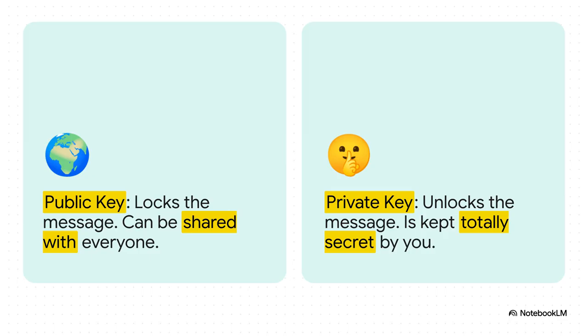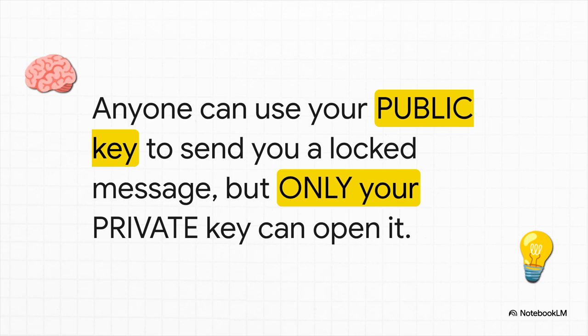You have two keys: a public key and a private key. The public key you can share with absolutely everyone — shout it from the rooftops. Its only job is to lock messages. But the private key is for your eyes only. You never, ever share it. Its only job is to unlock the messages that your public key locked. And this is the genius of it: I can post my public key on my website, and anyone in the world can use it to encrypt a secret message and send it to me. Even if a hacker intercepts that message, it's completely useless to them — because the only thing on the entire planet that can decrypt it is my private key, which never left my computer.